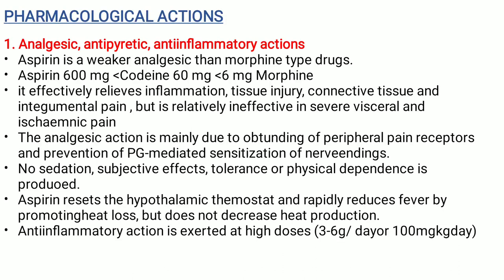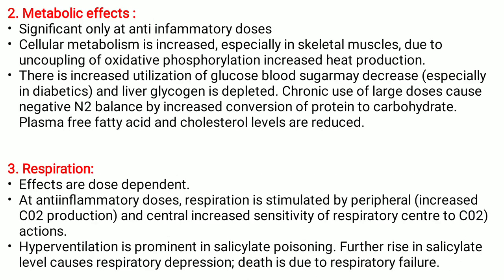Aspirin resets the hypothalamic thermostat and rapidly reduces fever by promoting heat loss, but it does not decrease heat production. Anti-inflammatory action is exerted at high doses — 3–6 g per day or 100 mg/kg per day. Metabolic effects occur significantly only at anti-inflammatory doses. Cellular metabolism is increased, especially in skeletal muscles, due to uncoupling of oxidative phosphorylation and increased heat production. There is increased utilization of glucose; blood sugar may decrease especially in diabetics, and liver glycogen is depleted.